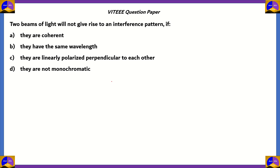So, how do we solve this question? Let's eliminate the options. The question says two beams of light will not give rise to an interference pattern if one of these conditions apply — the definitive word here is 'not.' If you look at option A, they are coherent, meaning from a similar source — then they do give rise to an interference pattern. So option A is incorrect.